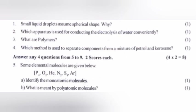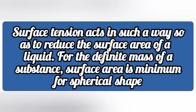Small liquid droplets assume spherical shape. Why? Answer: Surface tension acts in such a way so as to reduce the surface area of a liquid. For a definite mass of a substance, surface area is minimum for spherical shape.